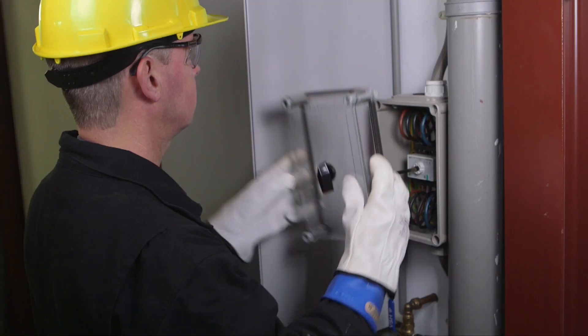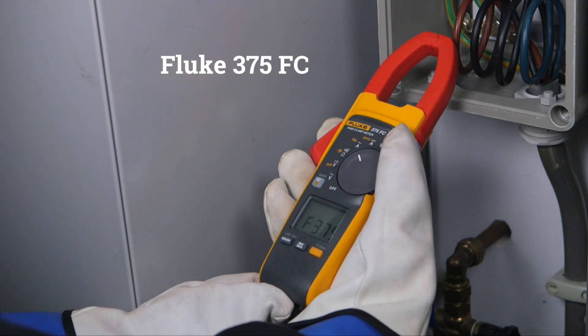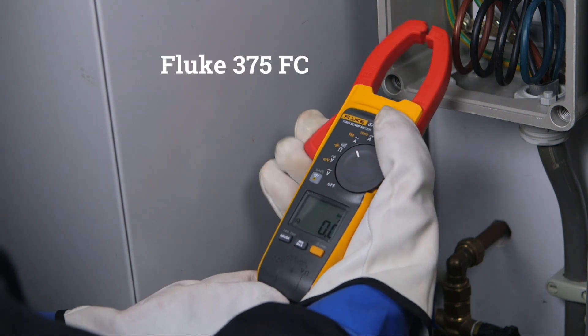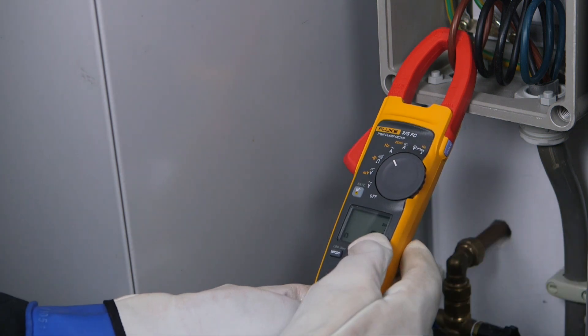The Fluke 375 FC is a high-performance clamp meter with wireless communication and logging capabilities. With the integrated variable frequency drive low pass filter, you are able to take accurate motor drive measurements.